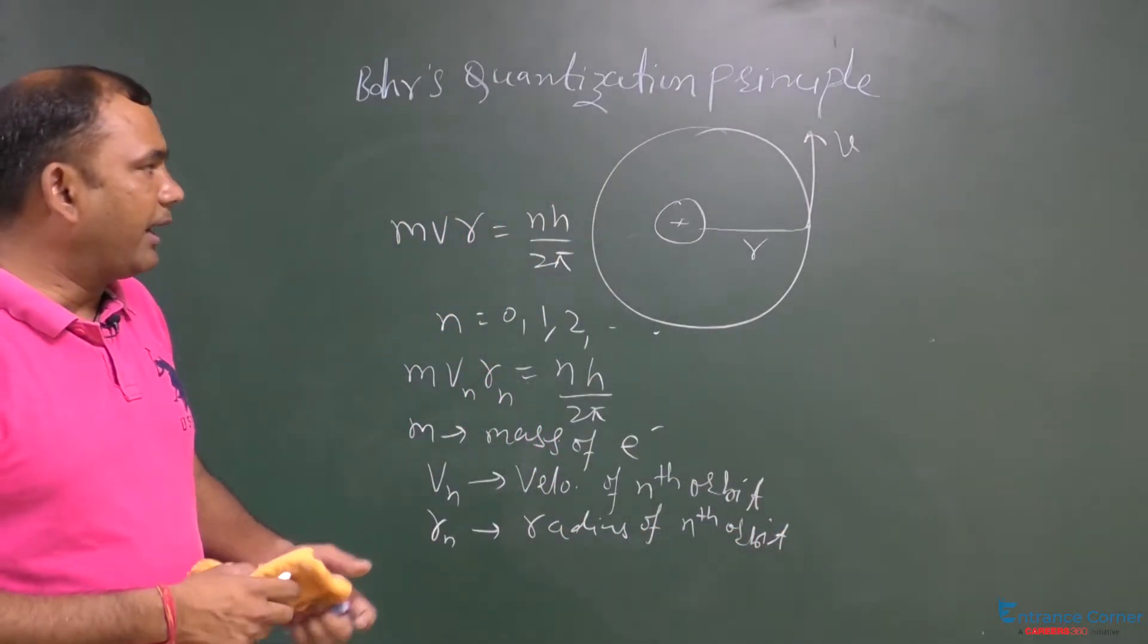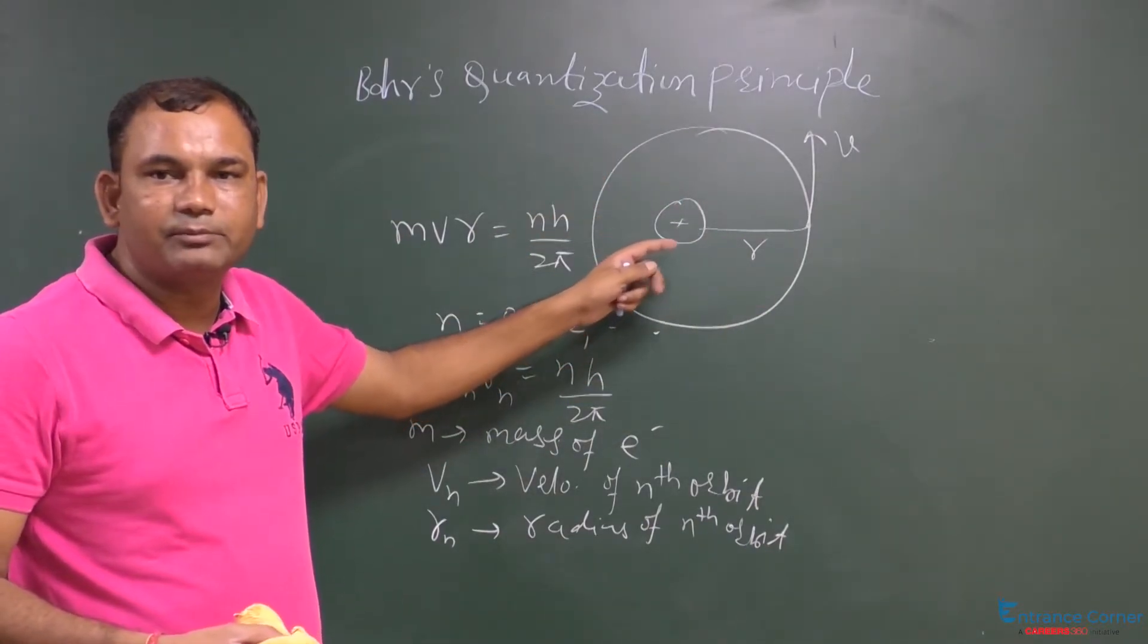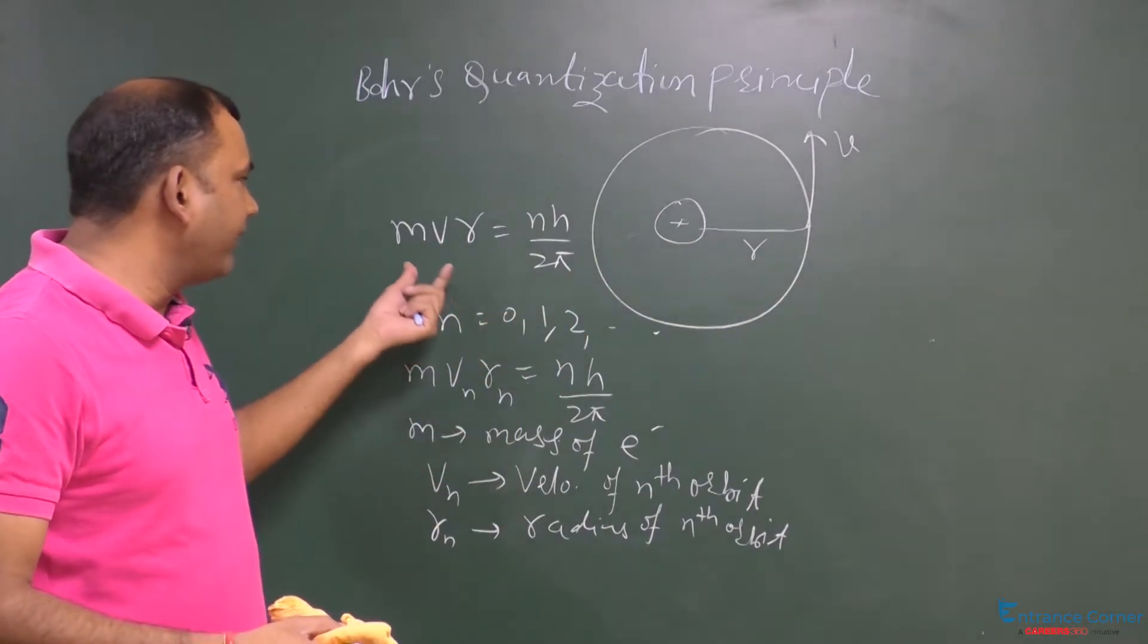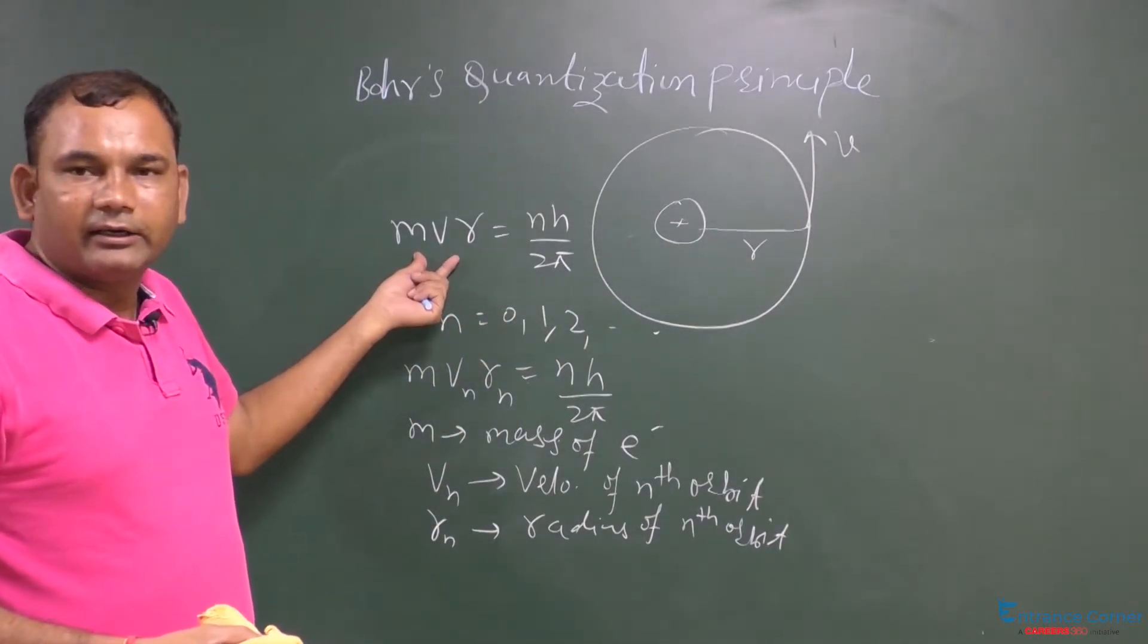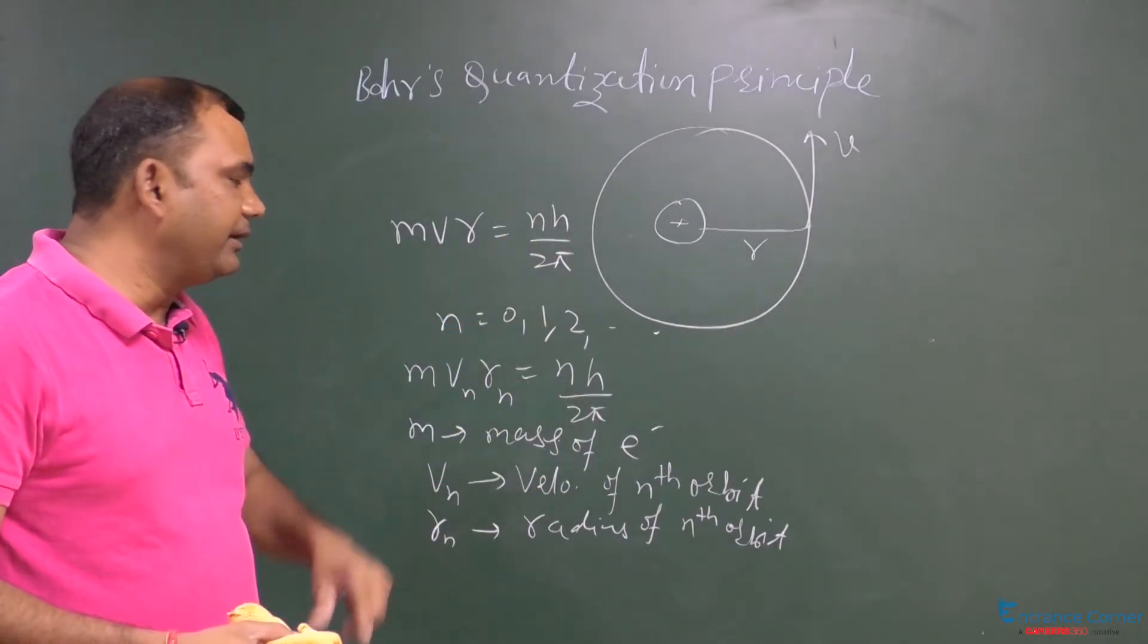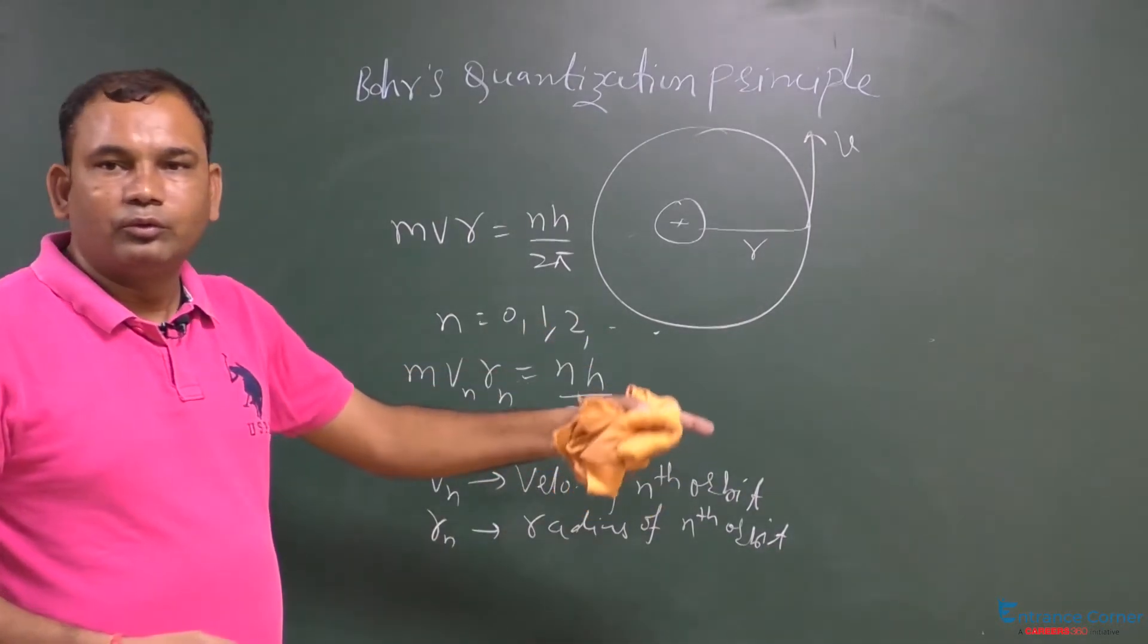So, again we define why electrons revolve around the nucleus, because of the electrostatic interaction. This is defined as m v r equals n h upon 2π, where n is any integer number. n may be 0, 1, 2 like that.